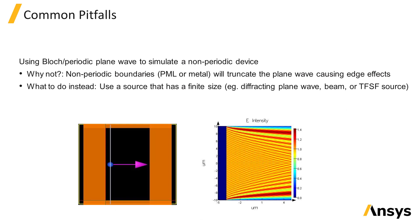Another situation is using the Bloch periodic plane wave for non-periodic devices. When non-periodic boundaries such as PML or metal boundaries are used, this will truncate the source at the sides of the simulation region and lead to edge effects as illustrated in the figure here. Instead, you should use a finite sized source such as a Gaussian beam or total field scattered field source, and both of these sources will be discussed later on in this section.